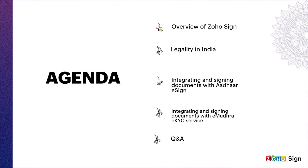Before we dive into the webinar, let's take a quick look at the agenda. I will start with a quick intro on Zoho Sign, following which Jay Prada will take you through why eSign is important for India, about the Information Technology Act of 2000 and how Zoho Sign complies with it. Once that's done, I will take you through how you can integrate Aadhaar eSign and eMudra eKYC services with Zoho Sign and get your document signed. Towards the end, we will have a Q&A session to answer any unanswered questions.